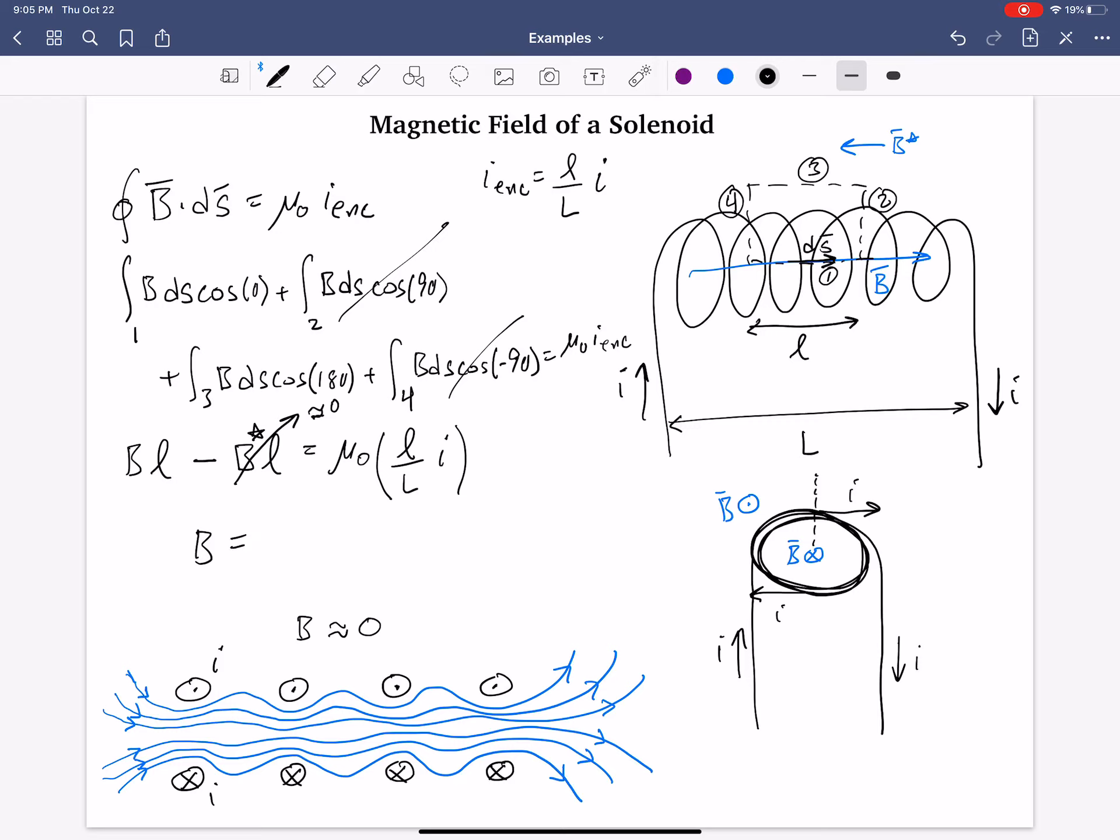And so, for the magnetic field, the script L's cancel, and we have mu naught I times, sorry, mu naught I divided by capital L. However, we need to also multiply by the number of currents or the number of loops, one, two, three, inside our Amperian loop or that pass through our Amperian loop. Okay? We'll call that the capital N. Right?